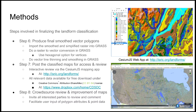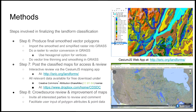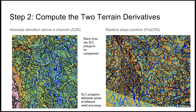Our approach also involved three post-processing steps. Step 6: further smooth and simplify vector polygons for the final landform classification using capabilities provided by GRASS GIS. Step 7: prepare final raster and vector data and post it to an online interactive platform for access and review. Step 8: obtain user input and evaluation of the proto-polygons via the online platform.